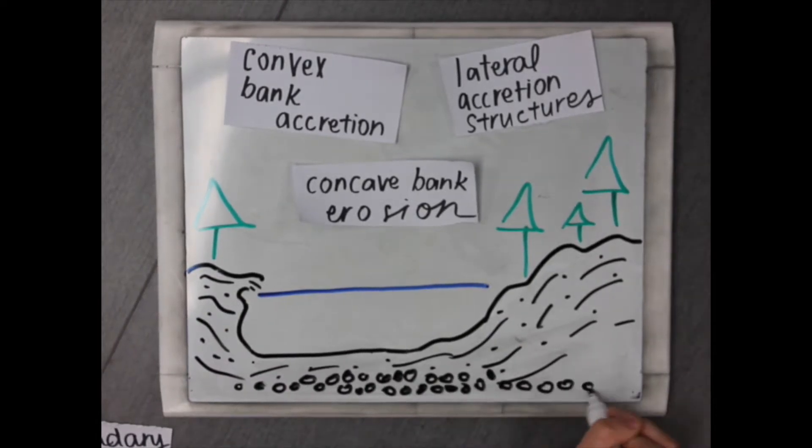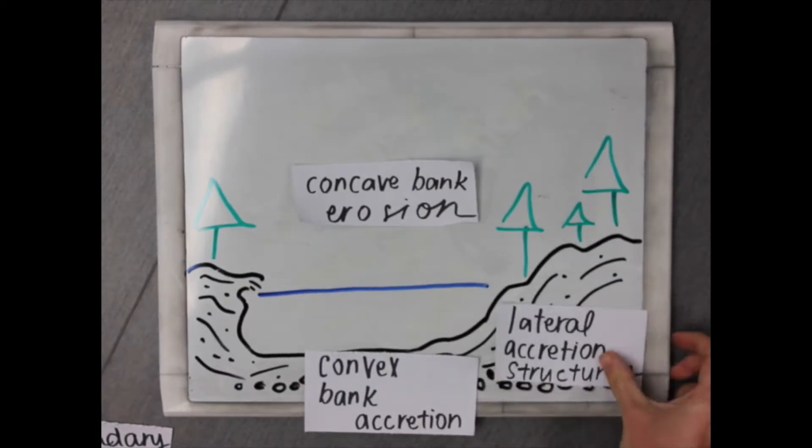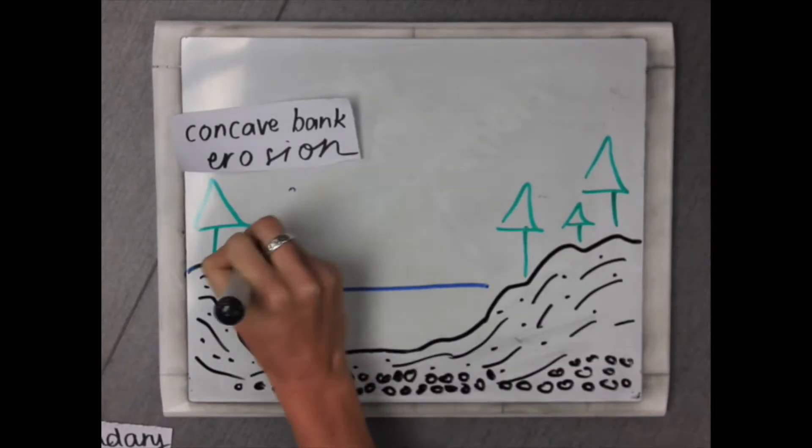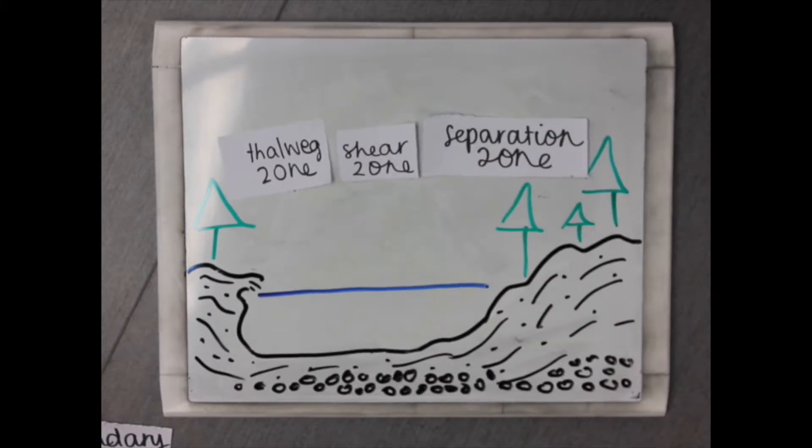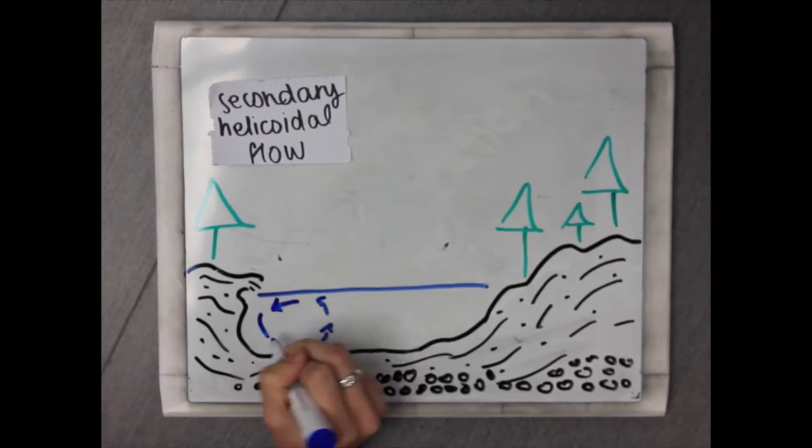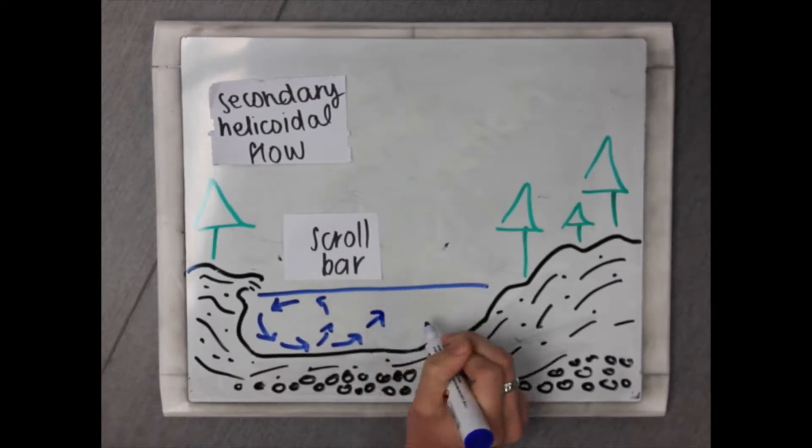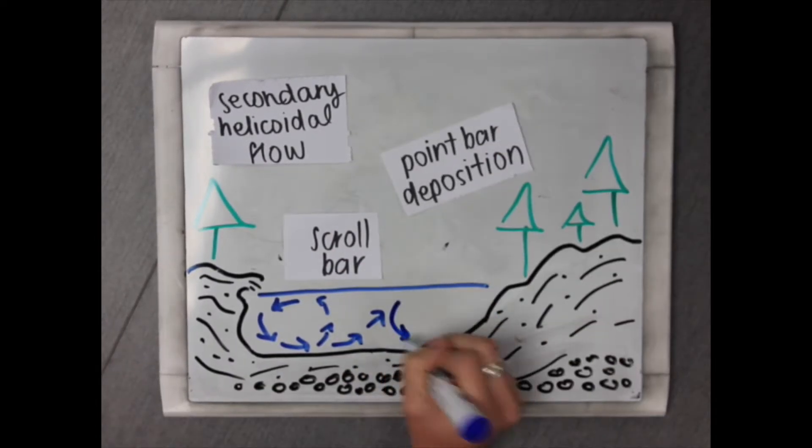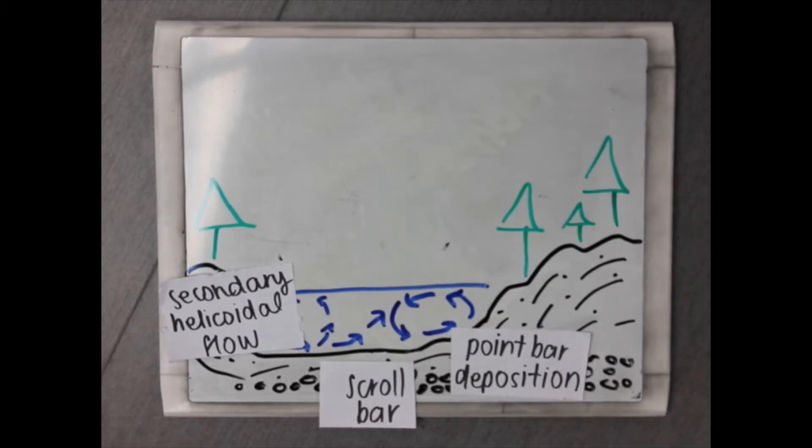This within channel accretion is responsible for about 60-90% of all material within a given floodplain area. This happens because of a helicoidal flow, slowly moving sediment over the scroll bar resulting in concave bank accretion and the creation of lateral accretion structures.